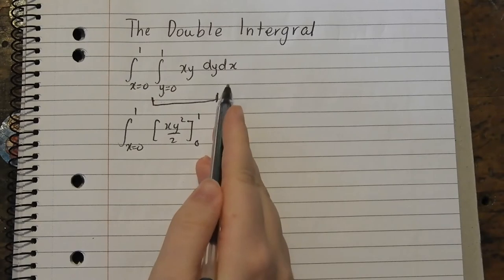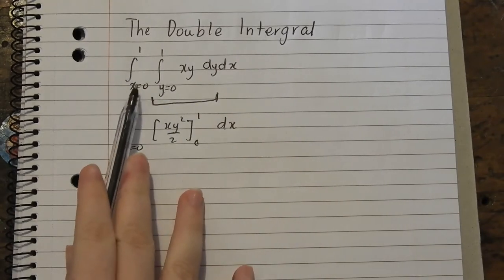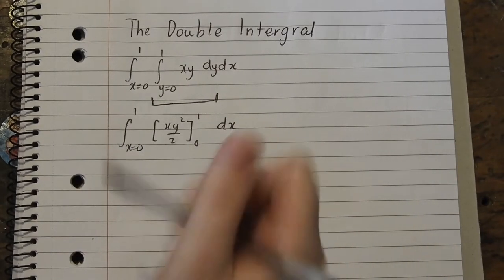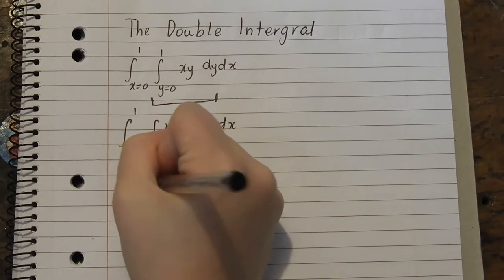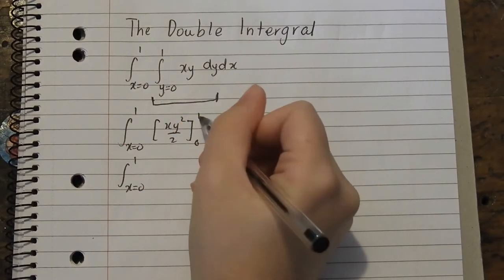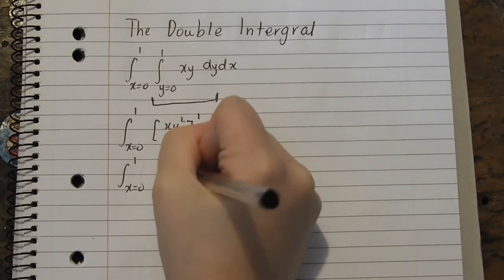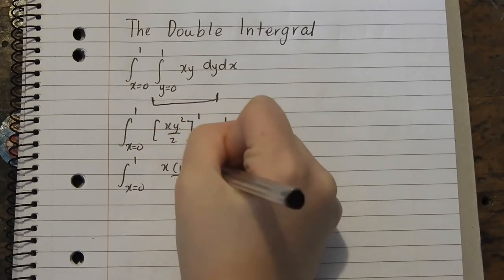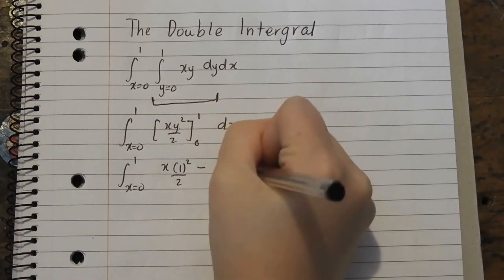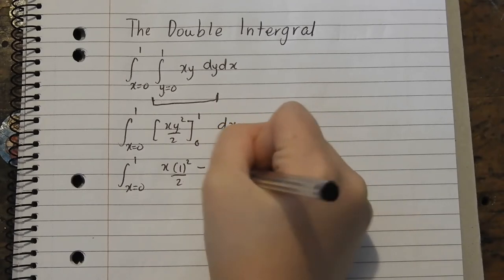We haven't done anything to him and we haven't done anything to this outer integral either. So this is integration x goes from 0 to 1 and sub 1 first into the y, so it's x 1 squared on 2 minus x 0 squared on 2.